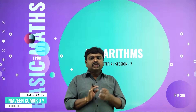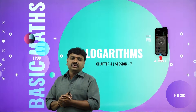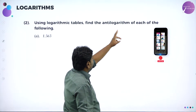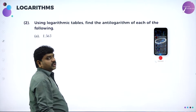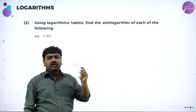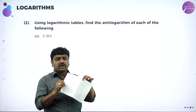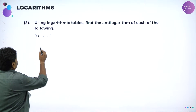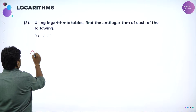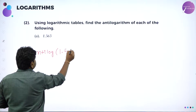Welcome to the session, dear students. Today we will go ahead with problems of logarithm — that is, finding anti-log. Using the logarithm tables, find the anti-logarithm of each of the following. You can make use of the logarithm table, which has both log and anti-log sections. The first problem is to find anti-log of 1.563.